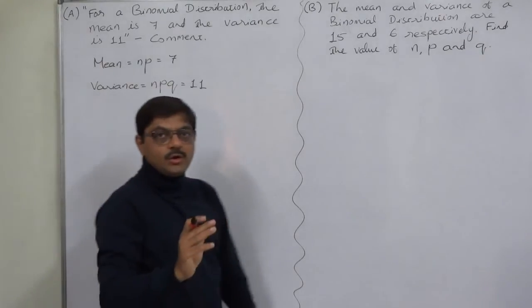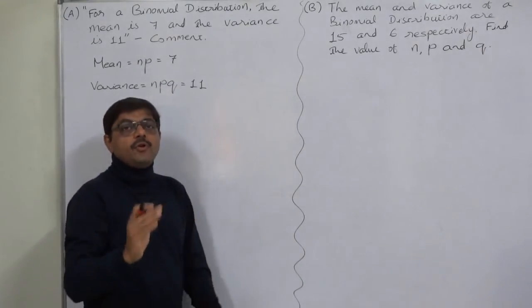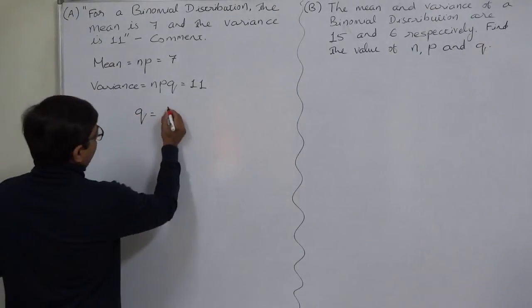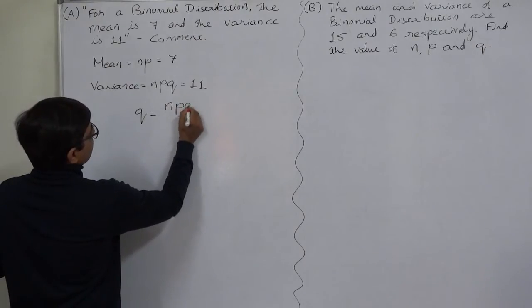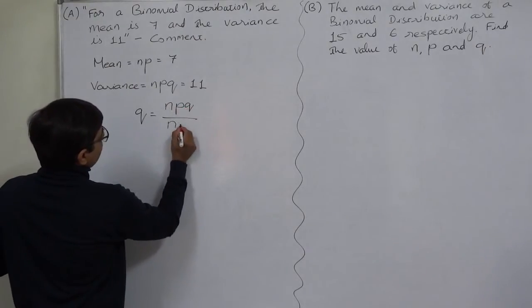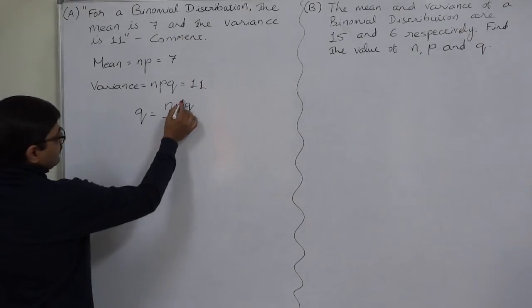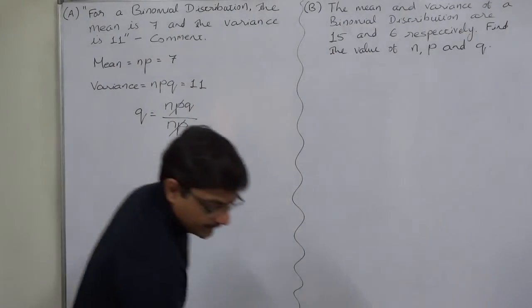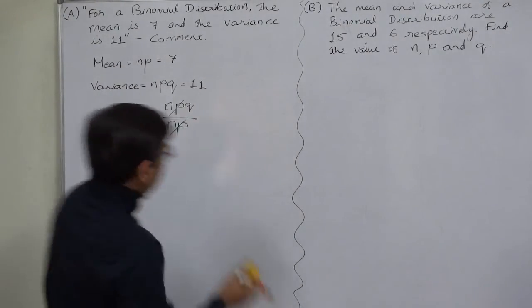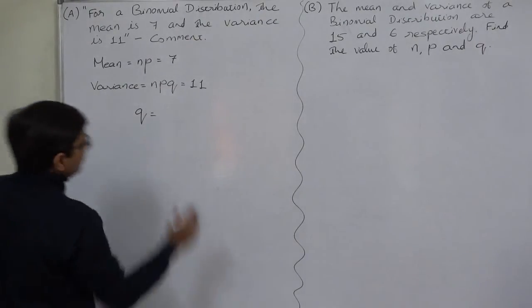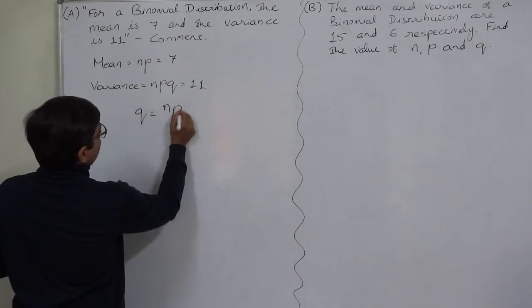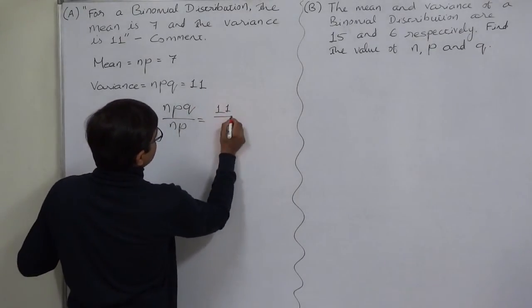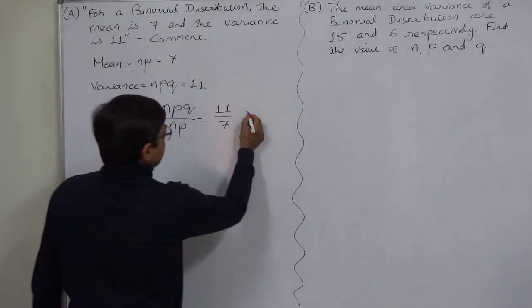Now what will be the process of finding Q? That will be NPQ divided by NP. We can cancel NP and NP so there is Q only. But if we use the numerical values, NPQ divided by NP gives us 11 by 7, and that is greater than 1.